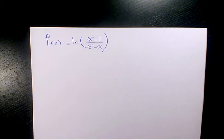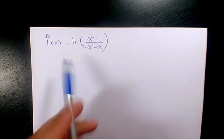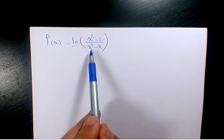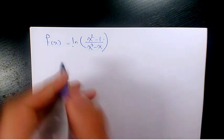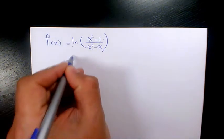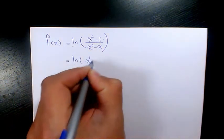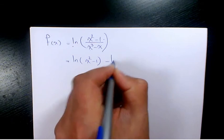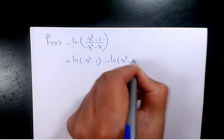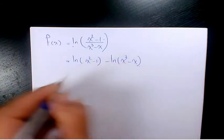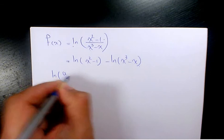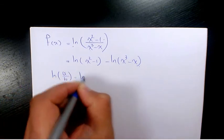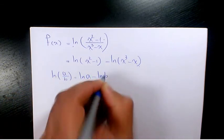Next example: f of x equals ln of x squared minus 1 over x cubed minus x. You can write this as ln of x squared minus 1, minus ln of x cubed minus x, because ln of a over b equals ln of a minus ln of b.